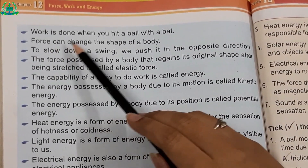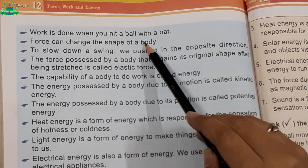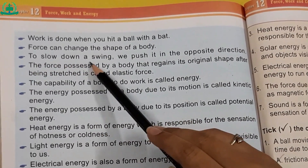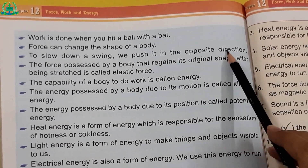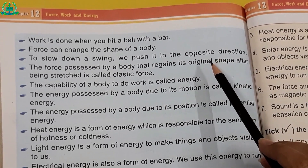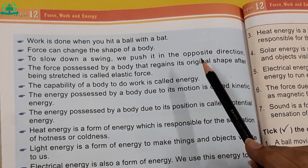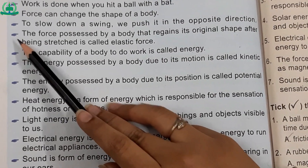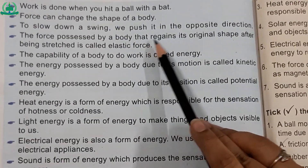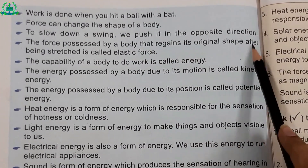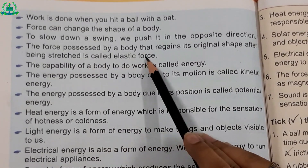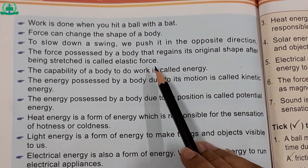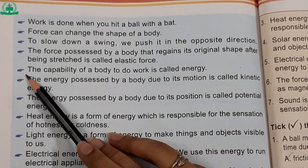Number five — force can change the shape of a body. Number six — to slow down a swing, we push it in the opposite direction. (Jhule ki raftar kam karne ke liye hame is ko opposite direction mein push karna hota hai.) Number seven — the force possessed by a body that regains its original shape after being stretched is called elastic force.